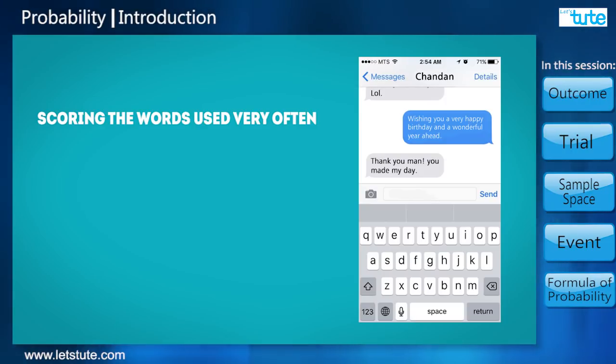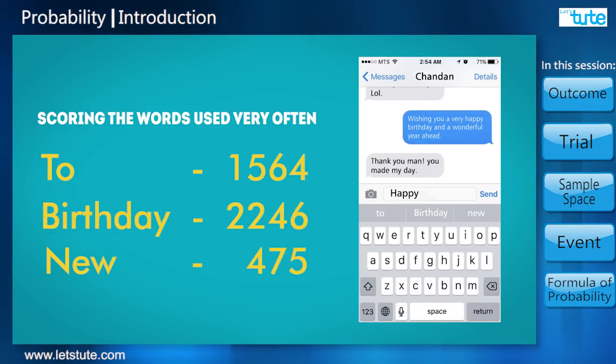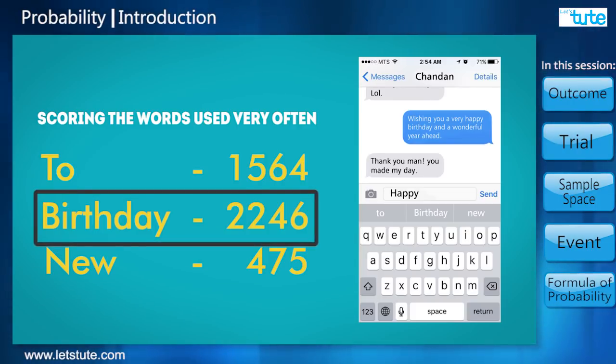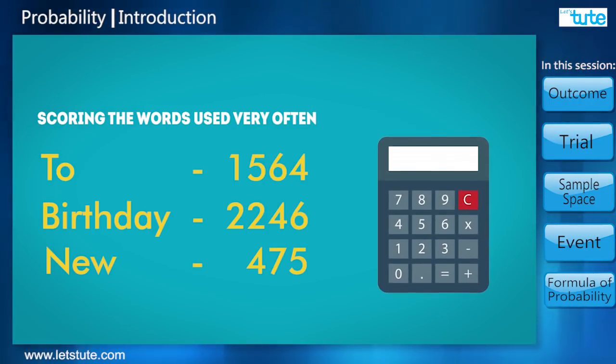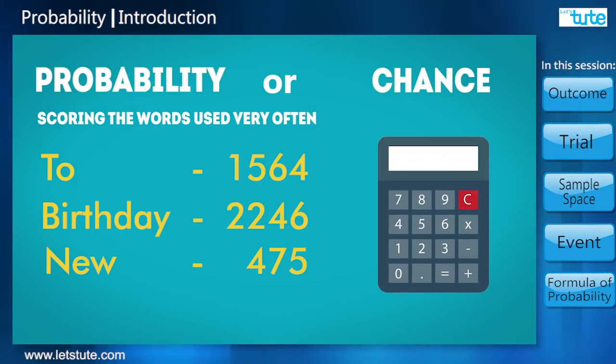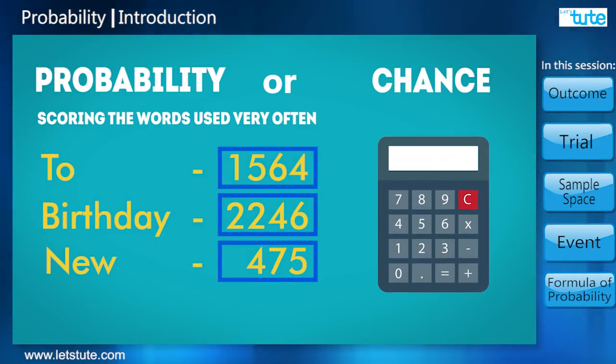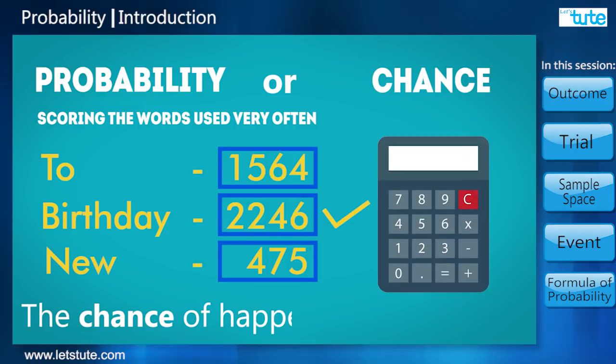For example, if you wish your friends on their birthdays by texting 'wishing you a very happy birthday and a wonderful year ahead,' every time you write 'happy,' the next words suggested would be birthday, new year, where the word with the highest score is placed in the center. The application does the suggestion by calculating the chances or the probability of using a word depending on the score of the word.